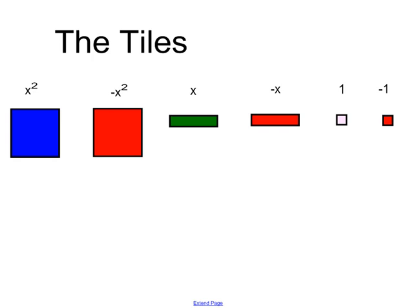The rectangular red tile is your negative x tile. And then you have two little squares. One is kind of a flesh-colored, and that's going to be your constant of 1. And then the little red will be your constant of negative 1.